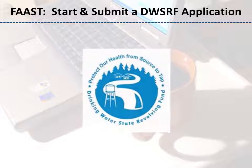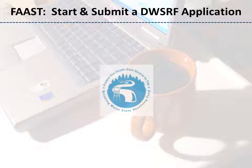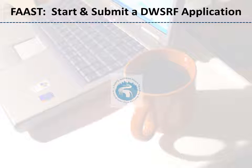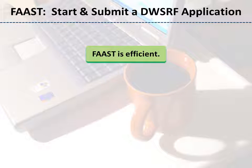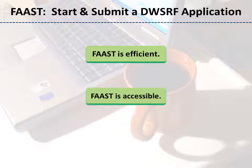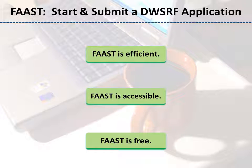The Drinking Water State Revolving Fund, DWSRF, program uses FAST to accept DWSRF applications electronically. FAST is efficient — online application submittal reduces paper waste and allows your application to be reviewed electronically for faster processing. FAST is accessible, available 24 hours a day, 7 days a week for your convenience. And FAST is free — you are not required to purchase special software. You need an internet connection and a web browser to use FAST.